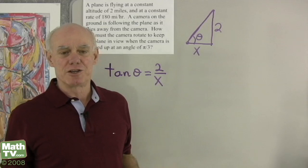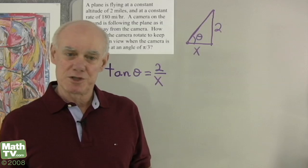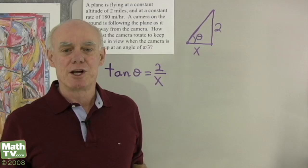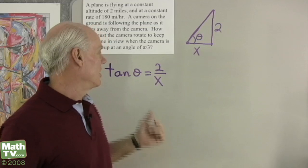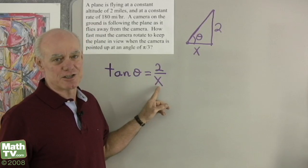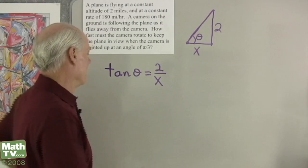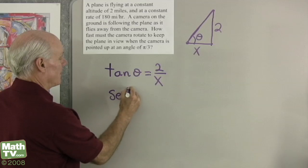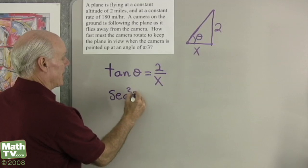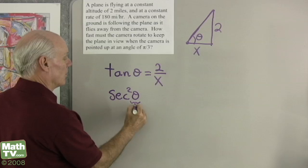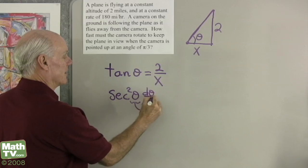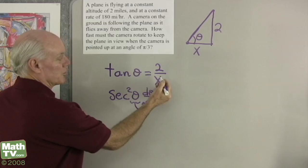Now, if I differentiate this with respect to time, which means I'm going to differentiate implicitly, then I'm going to get a relationship between the rates of change of theta and x. When I differentiate tangent, I get secant squared theta, and then by the chain rule, I need to differentiate theta with respect to t — so d theta dt.